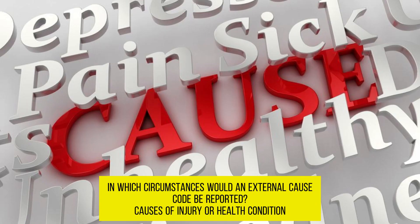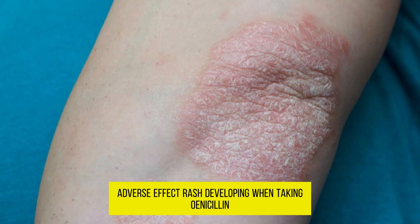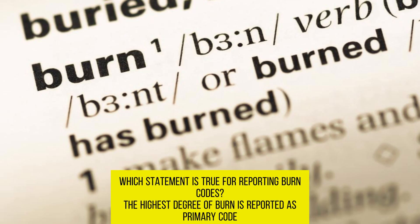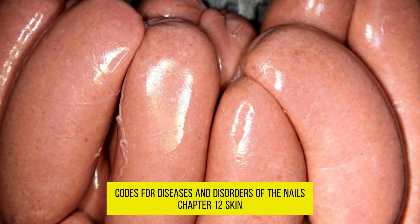In which circumstances would an external cause code be reported? Causes of injury or health condition. Adverse effect: rash developing when taking penicillin. CKD stands for chronic kidney disease. Which statement is true for reporting burn codes? The highest degree of burn is reported as the primary code. Codes for diseases and disorders of the nails are found in Chapter 12, skin.